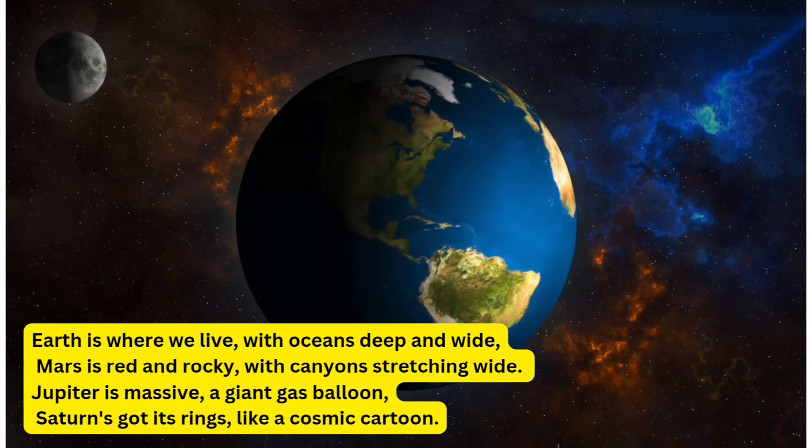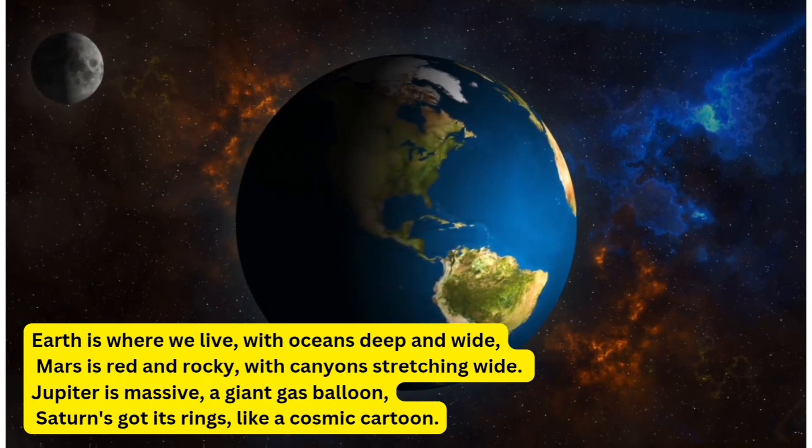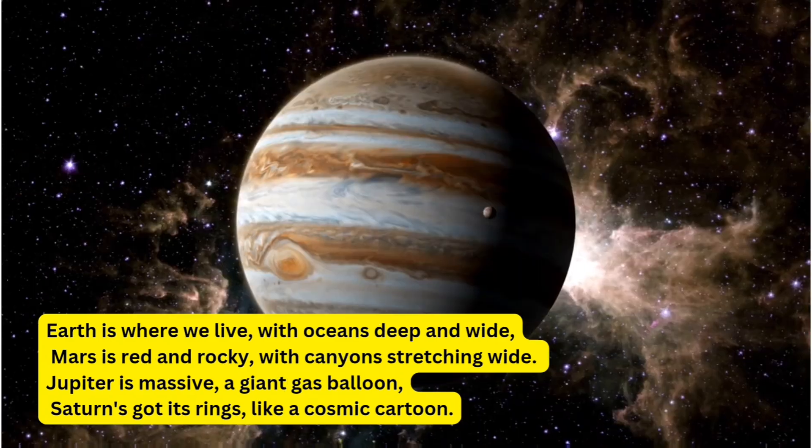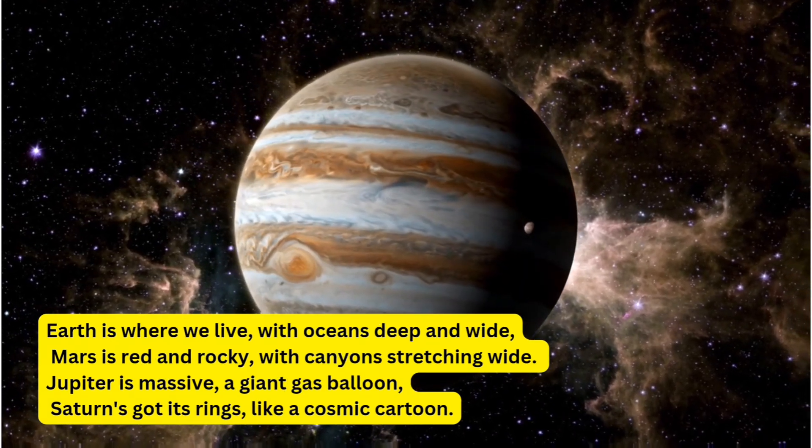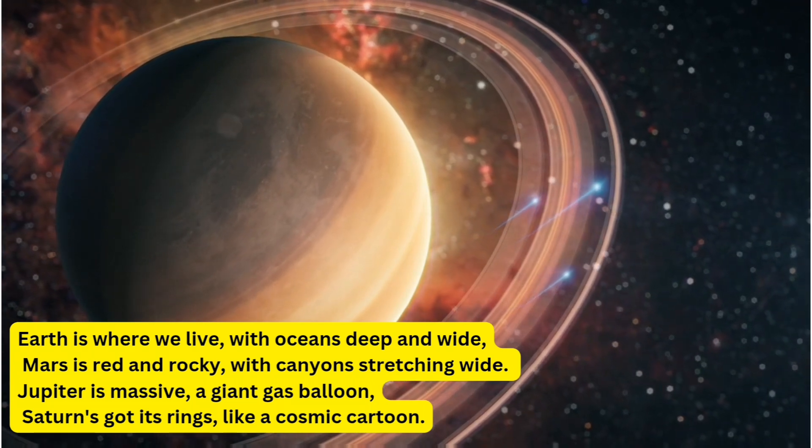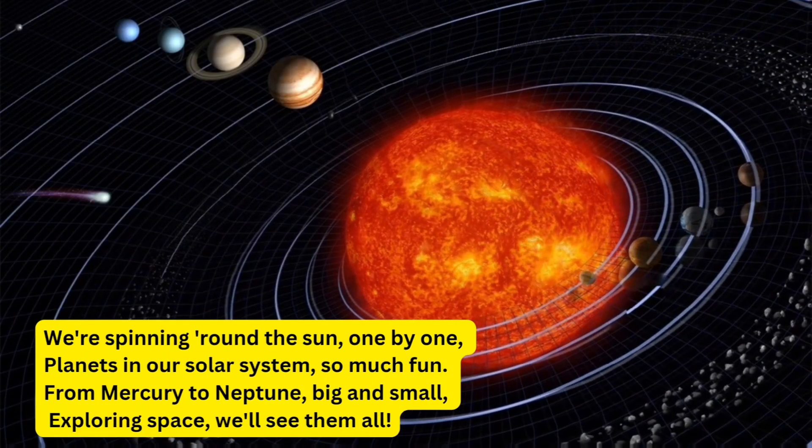Earth is where we live, with oceans deep and wide. Mars is red and rocky, with canyons stretching wide. Jupiter is massive, a giant gas balloon. Saturn's got its rings like a cosmic cartoon. We're spinning round the sun,